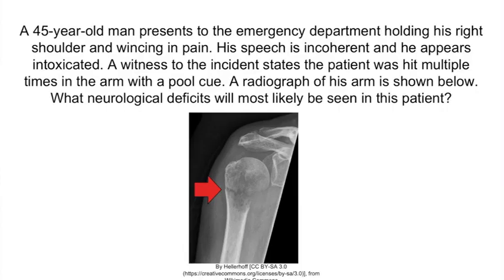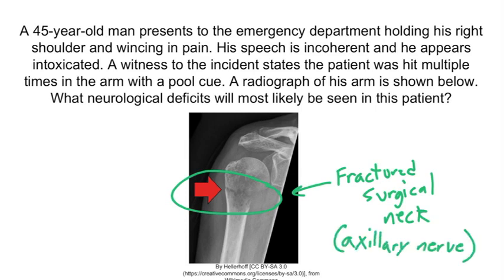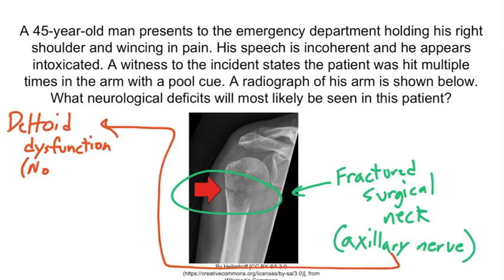Now a question to apply what you've learned. A 45-year-old man presents to the emergency department holding his right shoulder and wincing in pain. He appears intoxicated, and a witness states he was hit multiple times in the arm with a pool cue. A radiograph shows the surgical neck of the humerus is broken — this should immediately make you think of the axillary nerve. The deltoid muscle will be dysfunctional, so this patient will be unable to abduct his shoulder above 15 degrees. Since the question asks about neurological deficits — motor and sensation — sensation over the shoulder will also be lost.